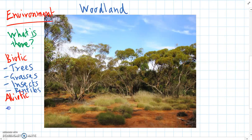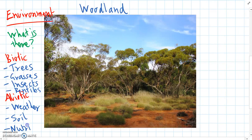Some of the abiotic factors we can see would be the weather, the soil, and other things like nutrients which are found in the soil as well. So the environment itself is just looking at what is there in that area.